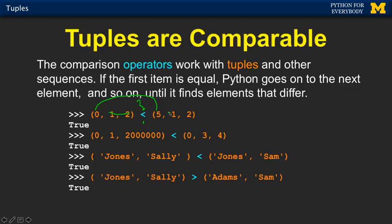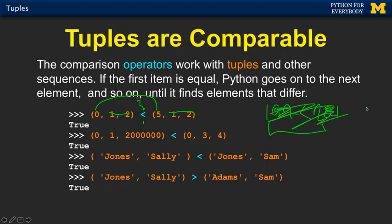And at that point it does not look beyond the 0 and the 5 — that's like the most significant element of the tuple, like the most significant digit of a number. If 199 is less than 201, it's because there's a 1 there and a 2 there, and the rest of these numbers really don't matter because that is the most significant digit.